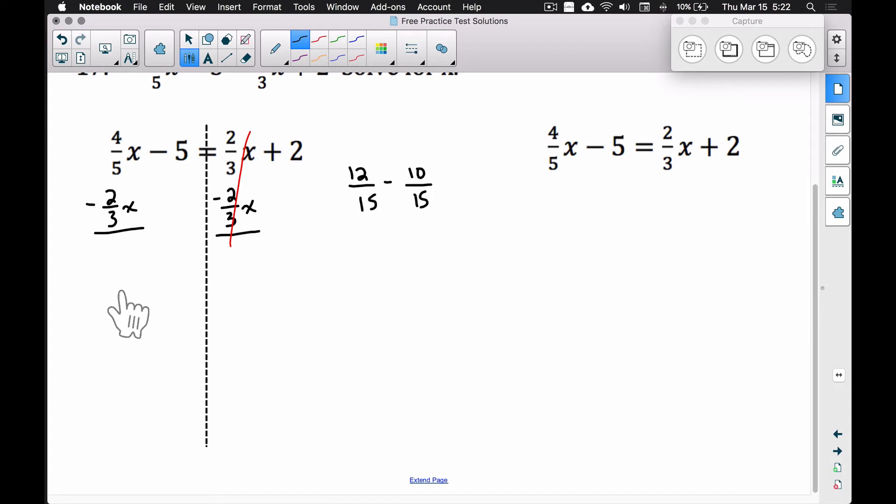When we subtract, 12 minus 10 gives us 2. Therefore we have 2/15 X minus 5 equals 2. Notice I brought down the negative 5 and the 2. Let's add this 5 to both sides to move the 5 over because we want to get this X by itself.